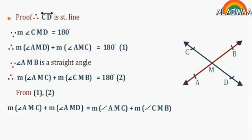By subtracting angle AMC from both sides, then measure of angle AMD equals measure of angle CMB.